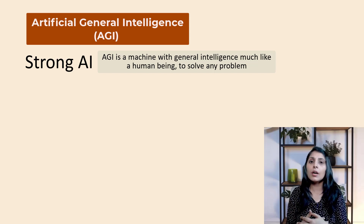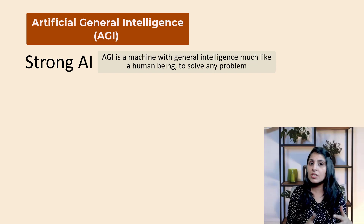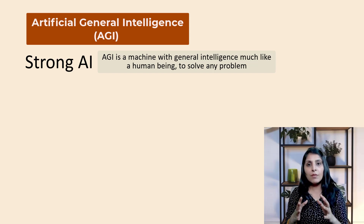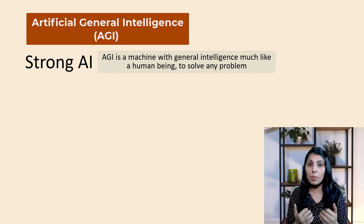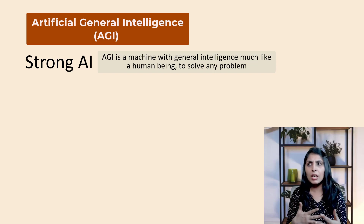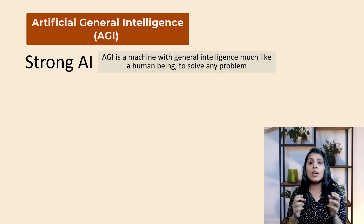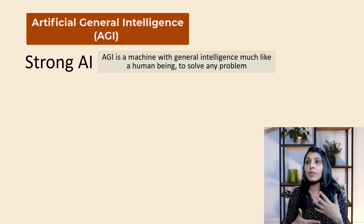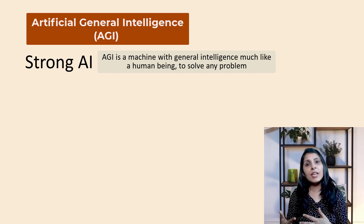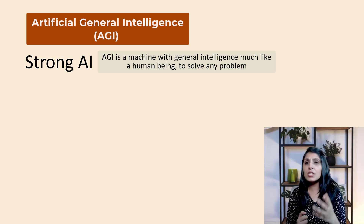If our computers and machines have such general intelligence that they can perform these kinds of tasks, then we can say that Artificial General Intelligence is achieved. When machines have cognitive ability like humans — general mental capabilities such as reasoning, problem solving, planning, thinking, and learning from experiences — if our machines have these capabilities, then we can say AGI has been achieved.